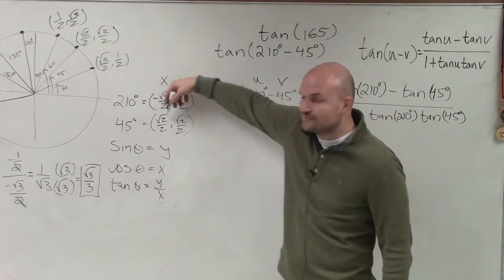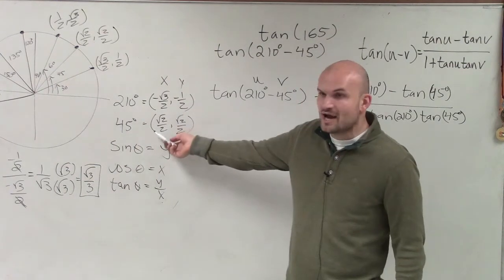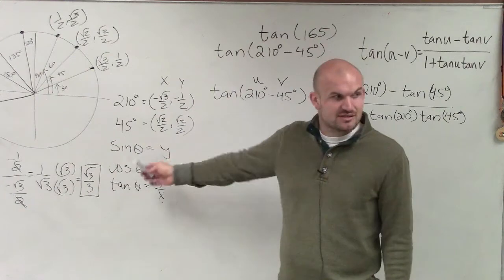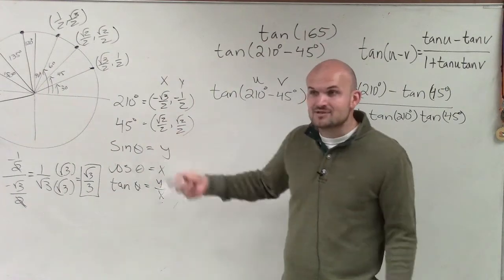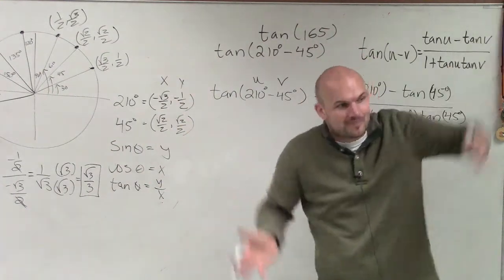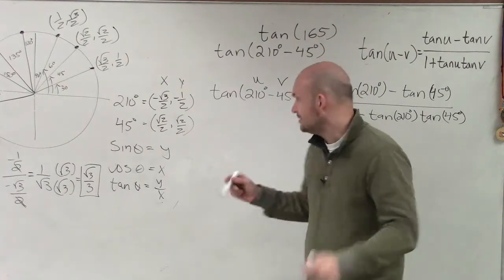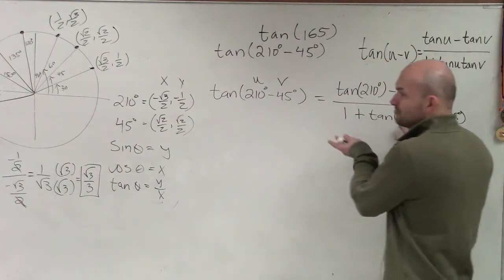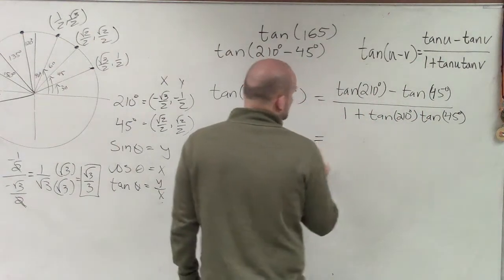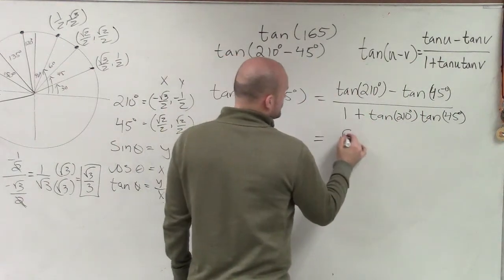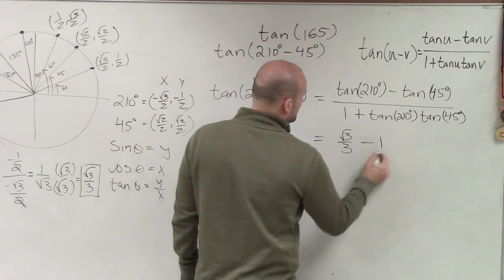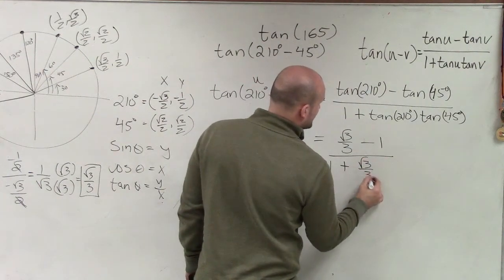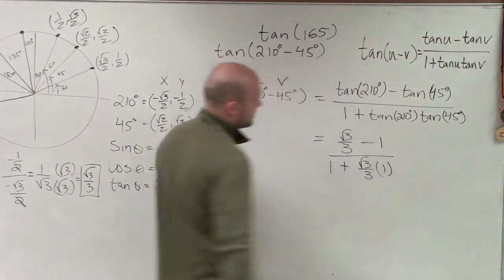For tangent of 45 degrees, if I take y over x those are the same numbers — they have a radical but they're the same. Any time you take the same number divided by the same number, you get 1. So tangent of 45 degrees is 1. Now plugging them in: it's square root of 3 over 3 minus 1, all over 1 plus the square root of 3 over 3 times 1.